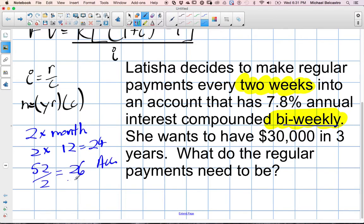So maybe we'll calculate both and see how it makes a difference. She wants to have $30,000 in three years. So what do the regular payments need to be? We'll highlight what our important information is. This will help us with our i value. This will help us with the n value. And this is the future amount, the $30,000.